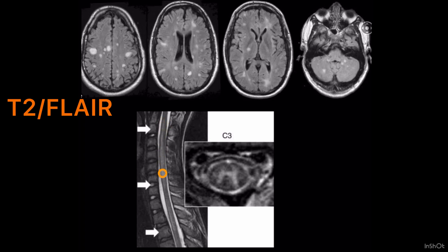So whenever you see signal changes in the cord and the patient is a child with a previous history of vaccination or any viral infection, and you see multiple T2 hyperintensities inside the brain — think about ADEM, Acute Disseminated Encephalomyelitis. Thank you very much.